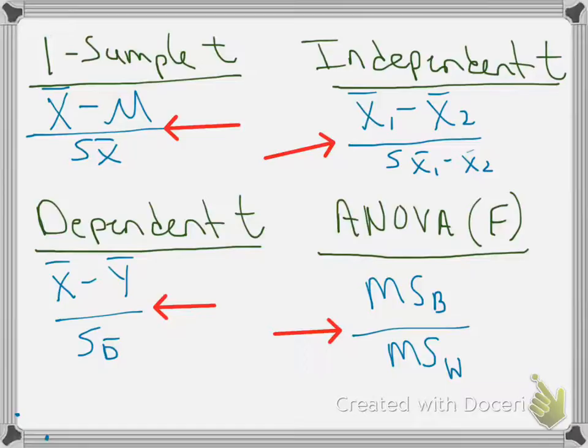So on the top, we say: what's the difference between my sample means on average, and how big is that difference compared to the amount of difference we would expect to get just due to random sampling? And that is this mean square within, otherwise known as the mean square error.